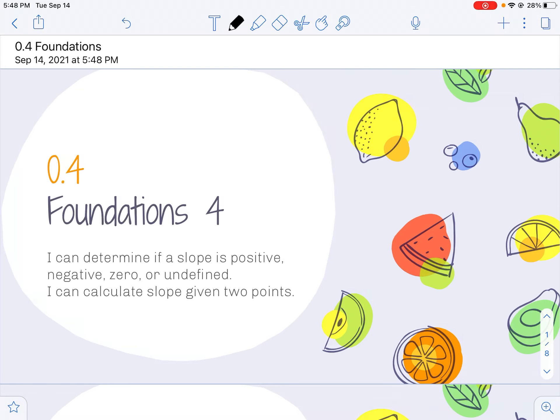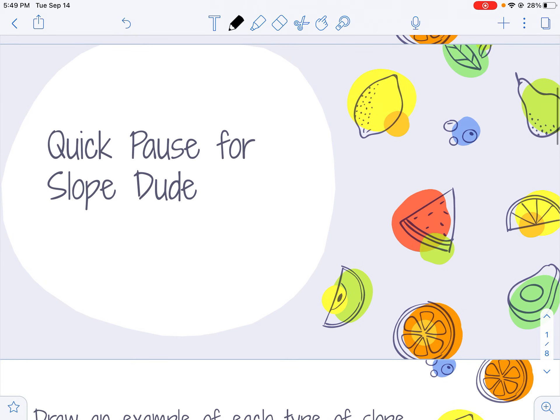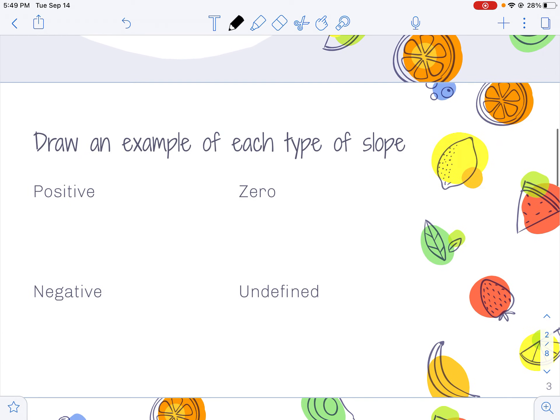In Foundations Lesson 4, we're going to determine if slopes are positive, negative, zero, or undefined, and we'll also calculate slope given any two points. On Schoology, you should find a link to Slope Dude. If you're watching this video later, go ahead and find that and watch it. It'll walk you through what these following slopes look like.